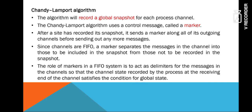Whenever a site records its snapshot — whenever the site records its state — it immediately sends a marker message through its outgoing channels. This marker message is used to differentiate which messages are included in the snapshot and which are not. That is the purpose of using a control message called the marker message. Since all channels follow the FIFO principle, the marker message is sent first and is therefore received by all processes before any other new message. The role of the marker message is that it acts as a delimiter.